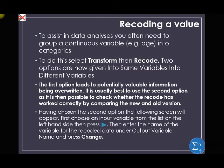Recording a value. To assist in data analysis, you often need to group a continuous variable, e.g. age. In research where the researcher did not give ranges for the respondent and they only entered their real age — like 24, 25 — we want to group this by ranges: 15 to 20, 21 to 30. It makes drawing inference easier when you group your age. To do this, under Transform we use Recode. Two options are given: into the same variable, or into different variables. The first option potentially overwrites valuable information, so it is usually best to use the second option.